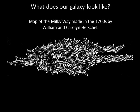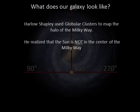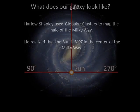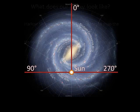They were fooled into thinking that our sun was near the galaxy's center. It wasn't until the 1920s that an astronomer named Harlow Shapley used observations of globular clusters to show that the sun is not at the center of the Milky Way.